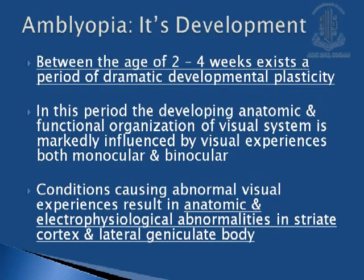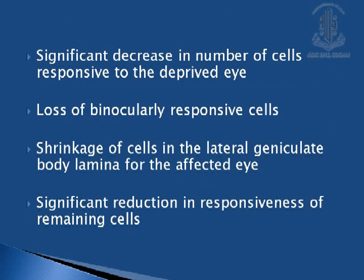Between the age of 2 to 4 years, there occurs a period of developmental plasticity. In this period, the developing anatomic and functional organization of the visual system is markedly influenced by visual experiences, and conditions causing abnormal visual experiences result in anatomic and electrophysiological abnormalities in the striate cortex and the lateral geniculate body. There is also a significant decrease in the number of cells responsive to the deprived eye.